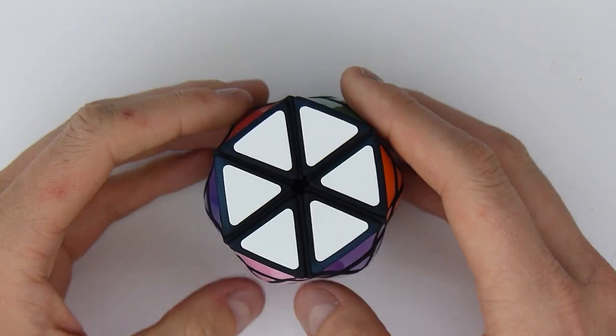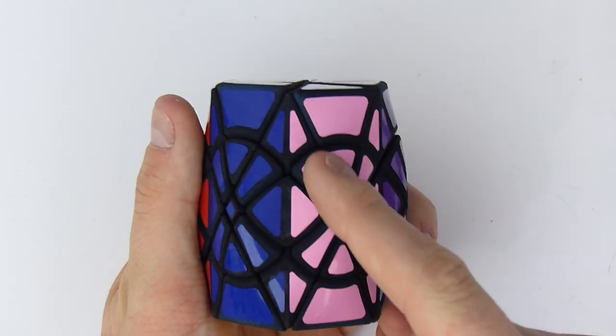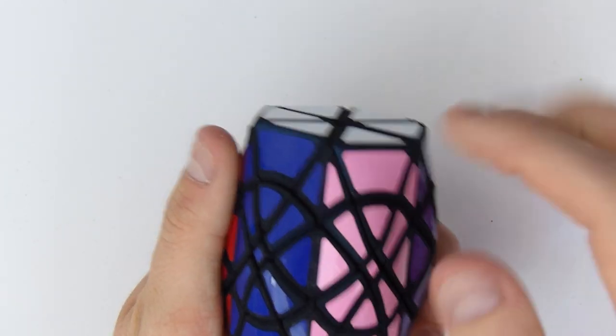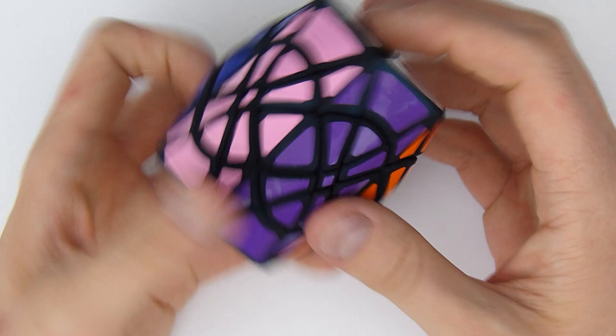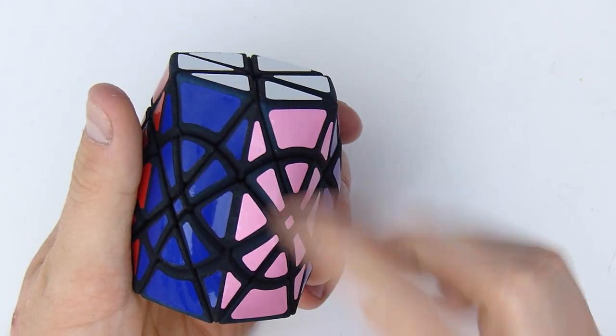Now the second part is that this puzzle has curvy cuts, reverse curvy cuts up here, and flat cuts. And it also uses a shells mechanism because there are two layers of puzzle in this puzzle.